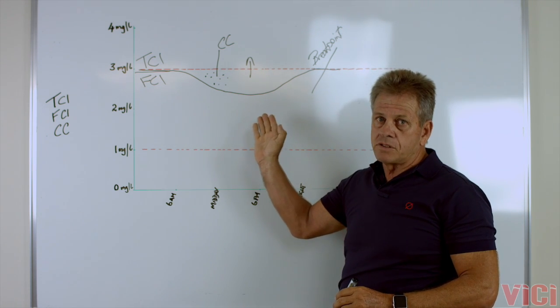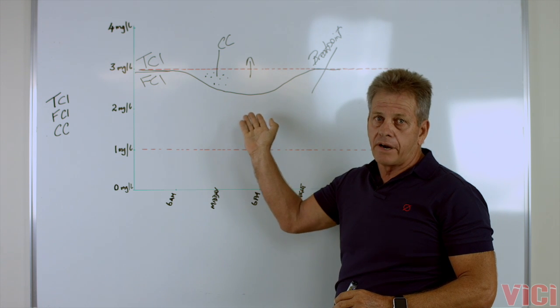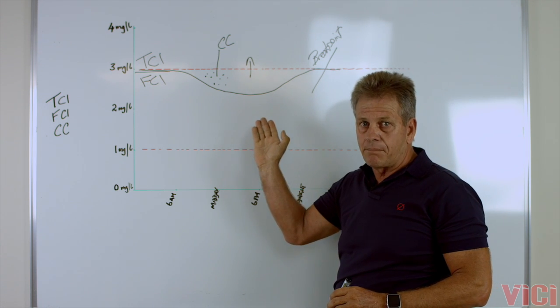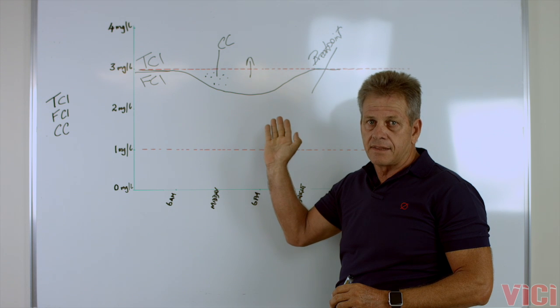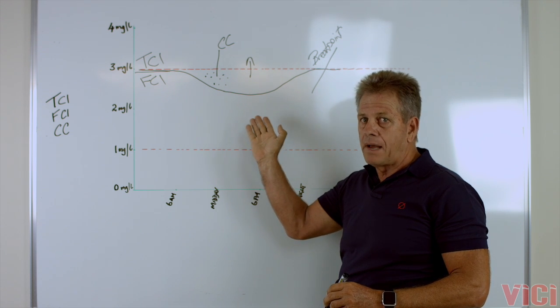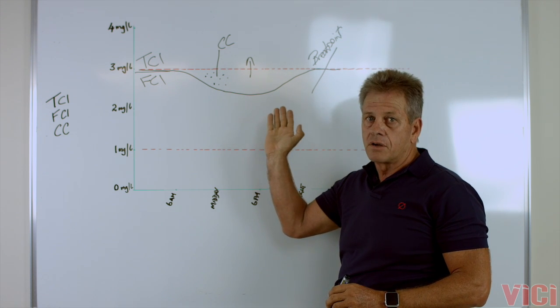You will always want to make sure that the combined chlorine level is never greater than one part per million. So that is the standard that the health department has set: one part per million for combined chlorine.